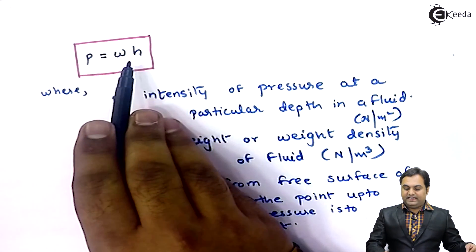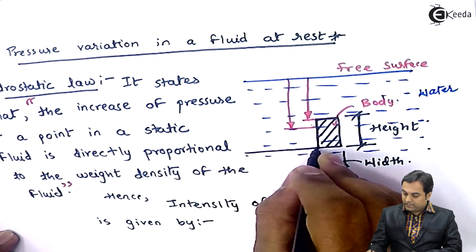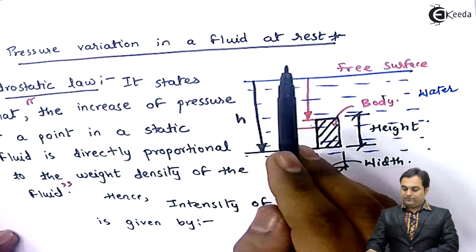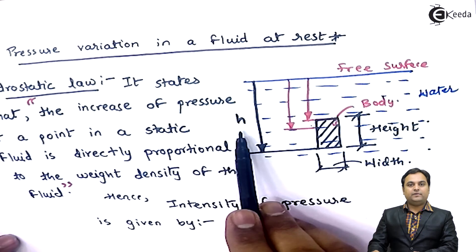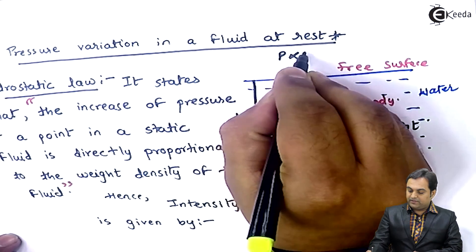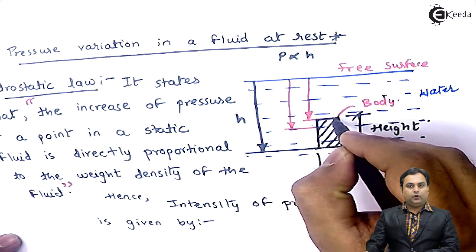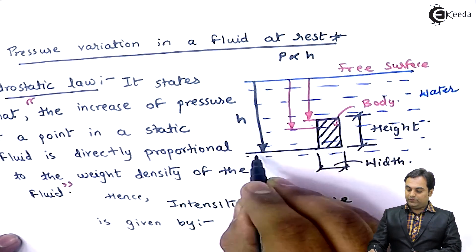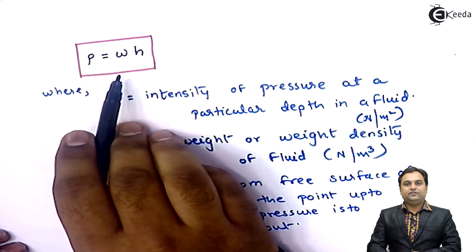Pressure intensity equals specific weight into the height up to which we want to calculate the pressure. H will go on changing. H will be maximum at the bottom — from the free surface of the liquid to the bottom of this body — and at this maximum height the pressure intensity will also be maximum. The pressure acting at the top of the body will be less, and as we increase H to its maximum value at the bottom, the pressure will be maximum.